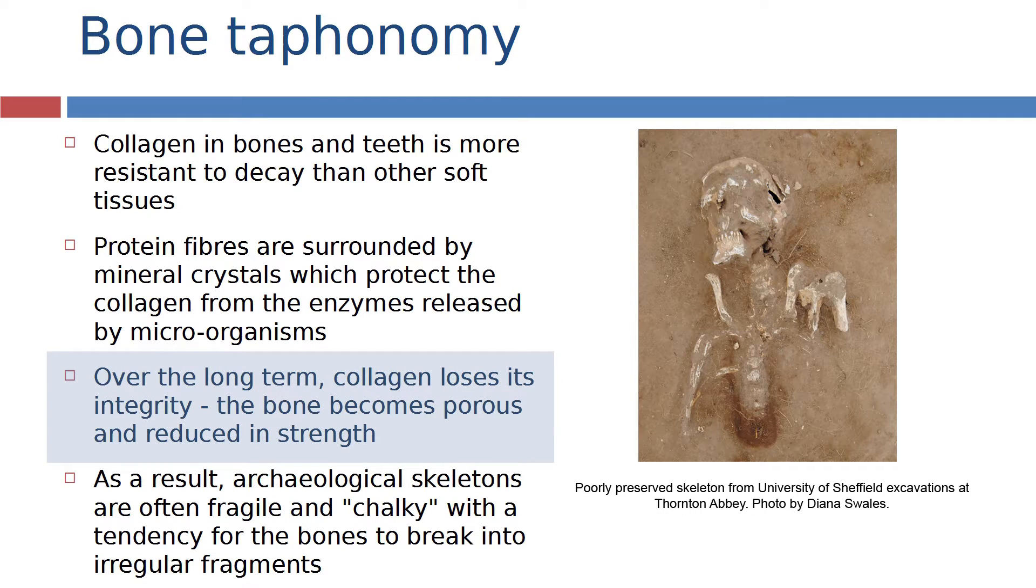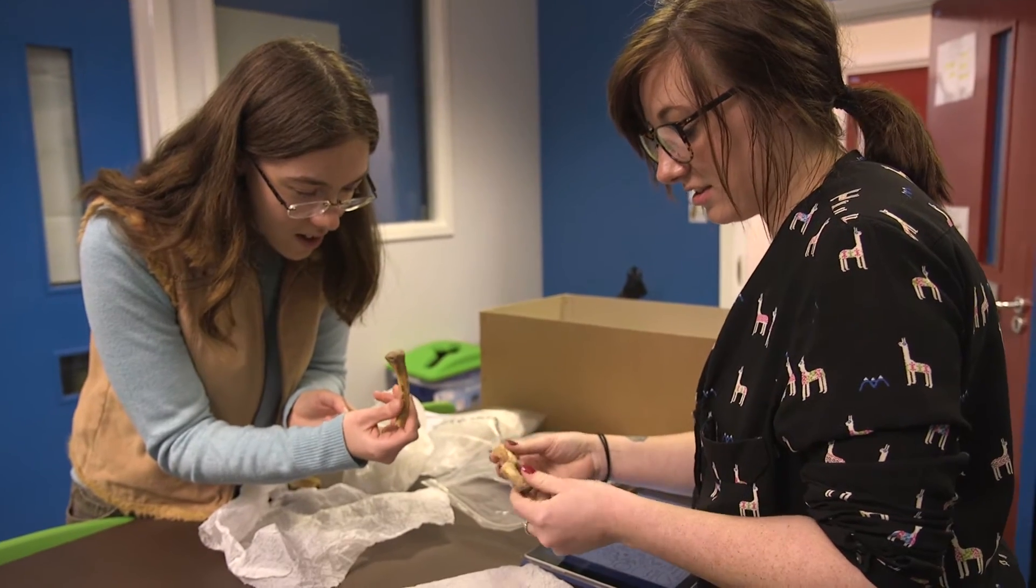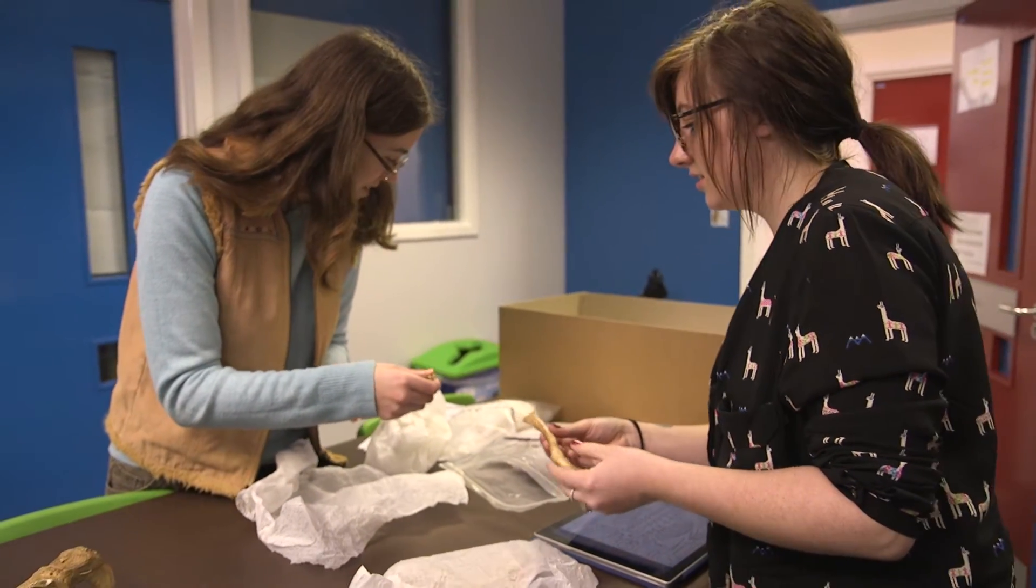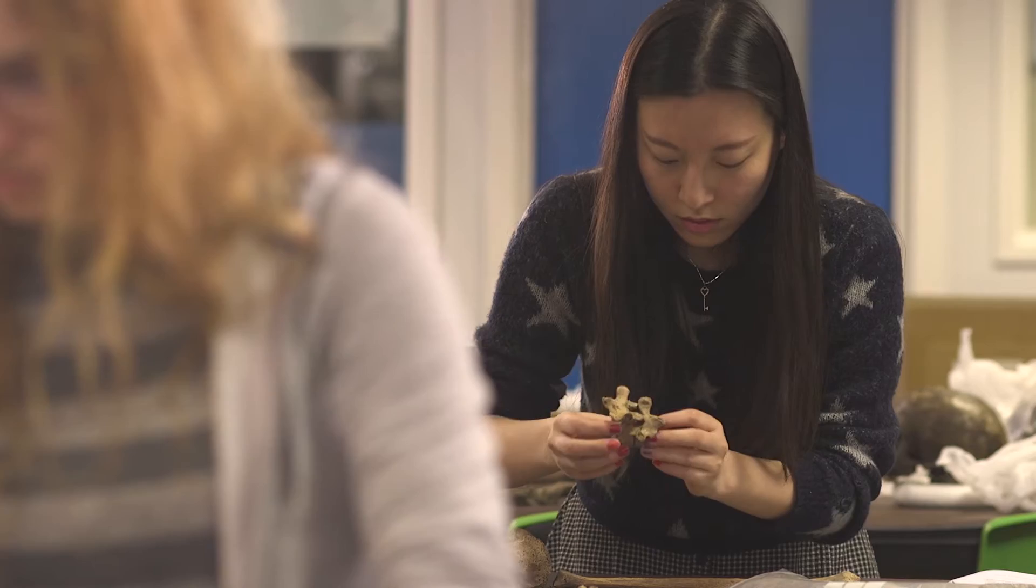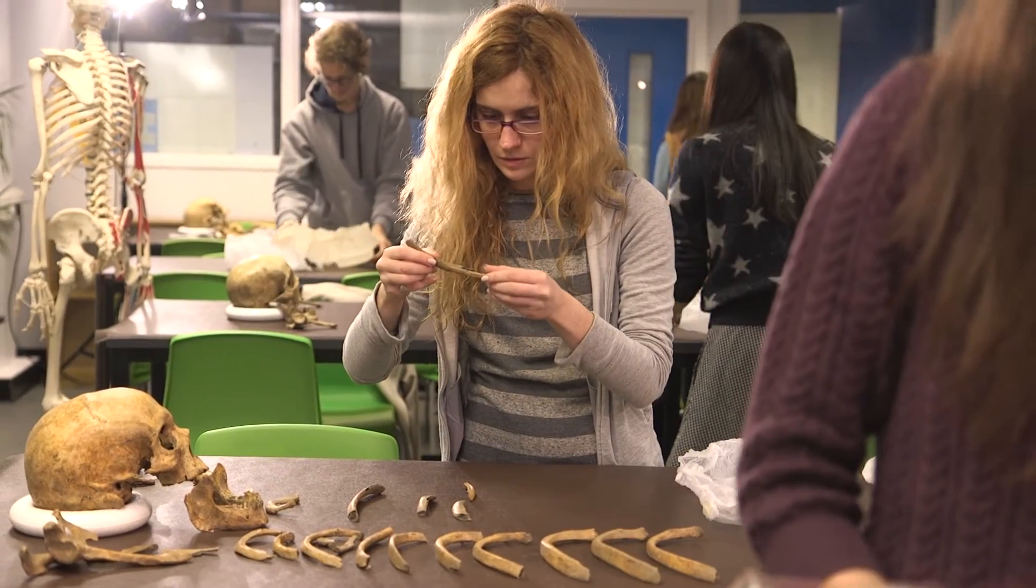So over the long term collagen loses its integrity and we're left mostly with the mineral component of bone. This means that archaeological skeletons are often very fragile, they feel quite chalky and they have the tendency to break both within the archaeological record and if we don't handle them very carefully in the lab.